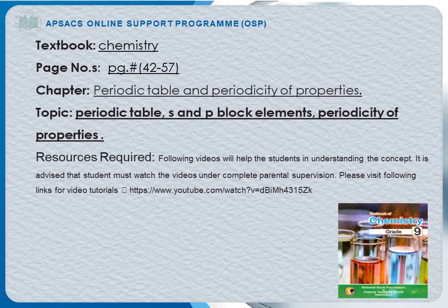Textbook Chemistry, Page No. 42-57, Chapter No. 3: Periodic Table and Periodicity of Properties. Topics included in this chapter are Periodic Table, S&P Block Elements and Periodicity of Properties. As it's my second lecture for this chapter, in the first video I discussed Periodic Table and S&P Block Elements. In this lecture, I will discuss Periodicity of Properties.